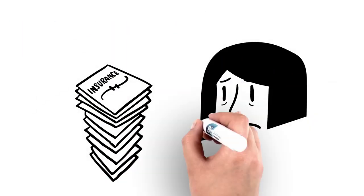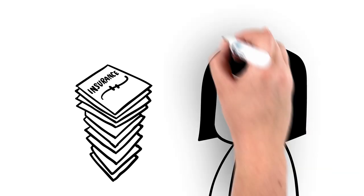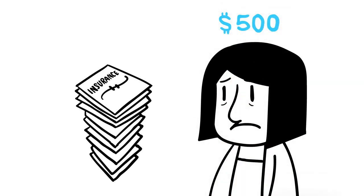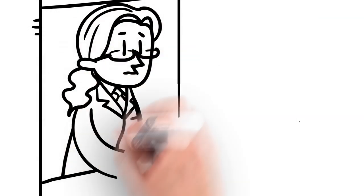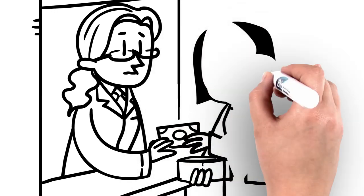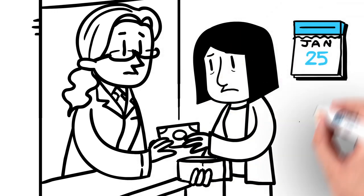But Joni doesn't benefit from the lower price. Why? Because her insurer makes her pay the drug's higher list price. So, Joni, who is enrolled in an insurance plan with a $1,000 deductible, will pay $500 at the pharmacy.